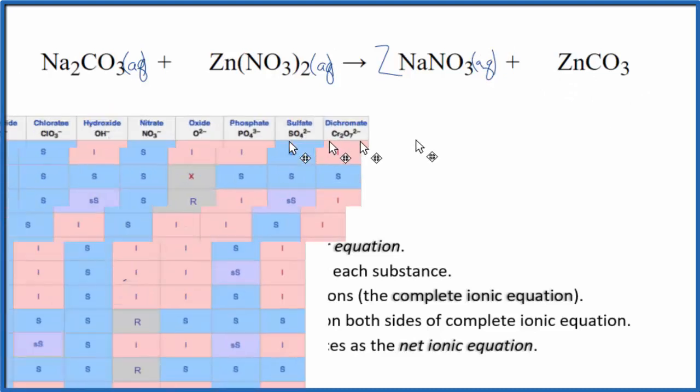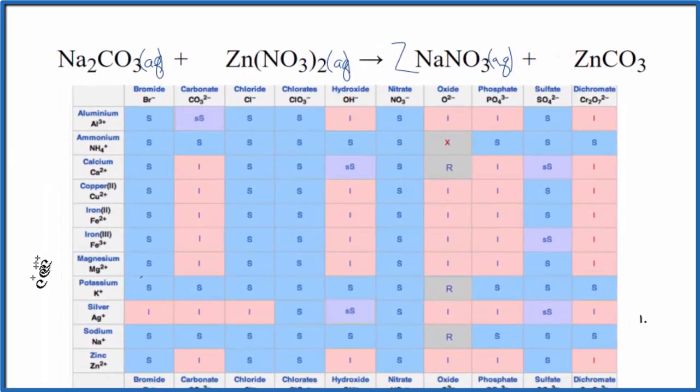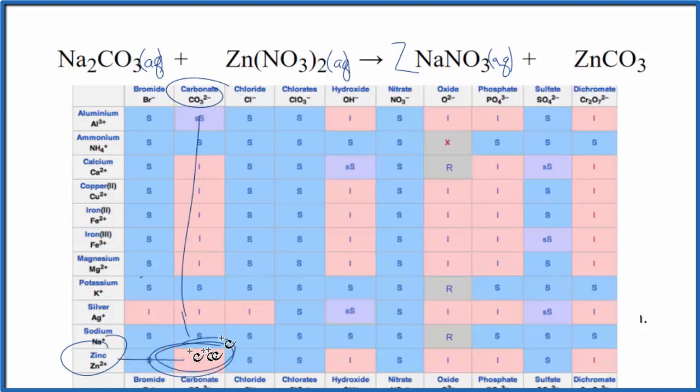Zinc carbonate though, let's check that on a solubility table. So here's our table. Zinc down at the bottom and then carbonate here. So we go down and then over and we see that I, that I means insoluble. It means it's not going to dissolve. So when these two substances react, we get a solid, that's our precipitate here. So zinc carbonate, we'll put a little s for solid.